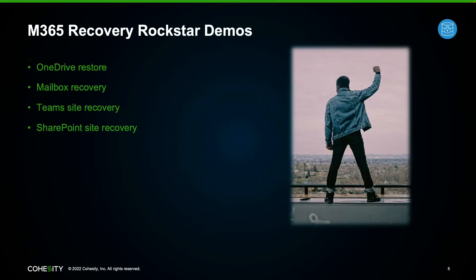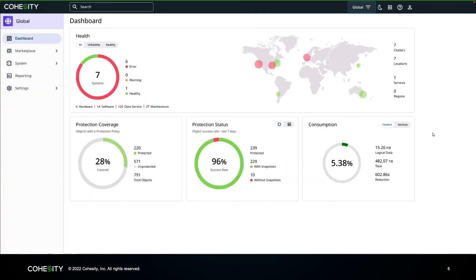Now that we've talked about challenges and are thinking differently about M365 data, we're going to shift into demos. I have a OneDrive restore, mailbox recovery, Teams site recovery, and SharePoint recovery. I'll show you our as-a-service offering for OneDrive, mailboxes, and Teams, and then take you into our Data Protect solution that you can deploy on-prem — yes, you can back up your Microsoft 365 workloads on-prem. We help you get around egress charges; there are no egress charges with our tool.